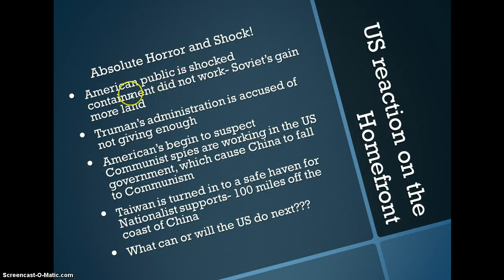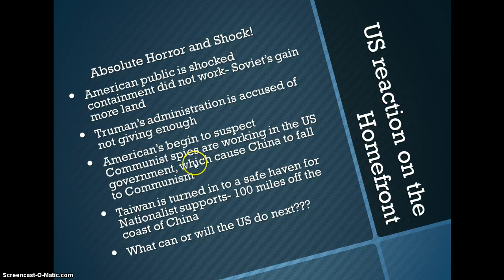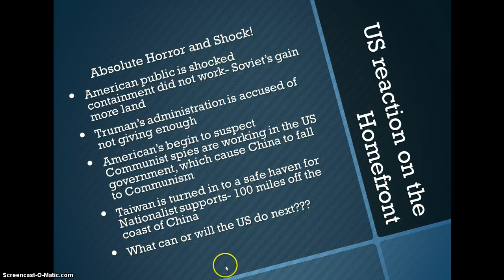The policy of containment had not worked. They were accused of not being tough enough or not giving enough aid. A lot of the red scare begins in America — we'll look at that in a future screencast. Taiwan turns into a safe haven 100 miles off the coast of China. So what is the move for the U.S.?